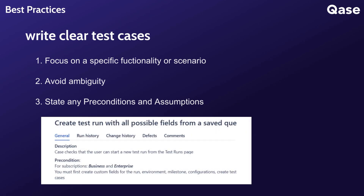Test case names should be descriptive and provide a clear understanding of the test's purpose. A concise name will help testers, developers, and other stakeholders quickly grasp the essence of the test. For example, instead of saying 'login test,' you could say 'test if the user is able to log in with valid credentials.' By clearly specifying the outcome, you make it easy to understand the test's purpose and expected result.